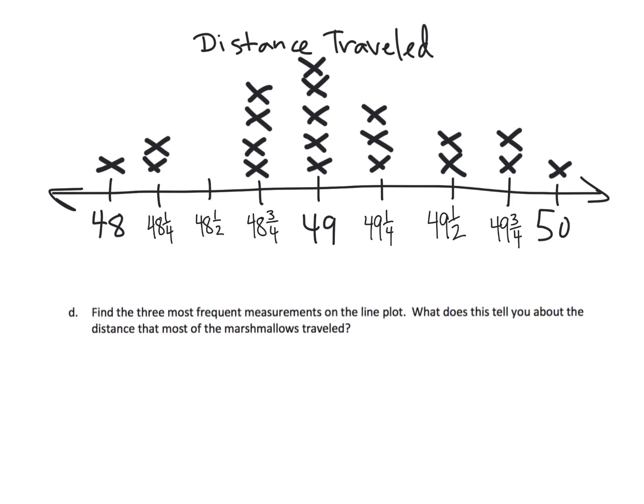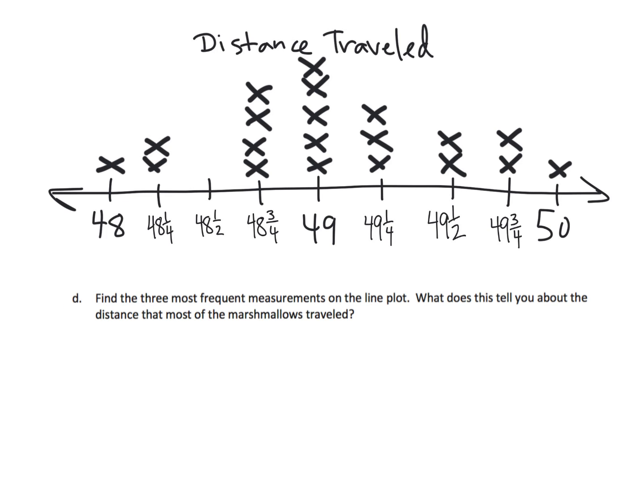And then the last question here is find the three most frequent measurements on the line plot. And so we can see those, they're the big tower right here. It kind of looks like what's famously known as a bell curve. Because if you think about it, it starts low, it goes up, and then it comes down. That's called a bell curve.